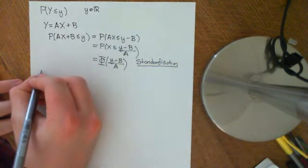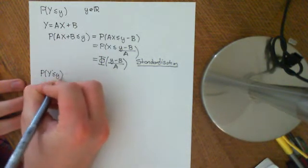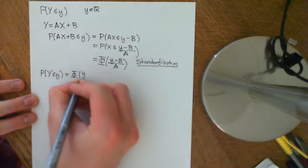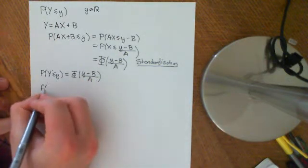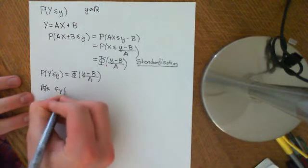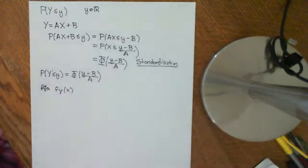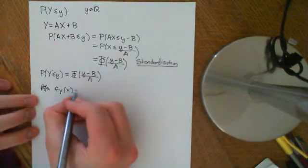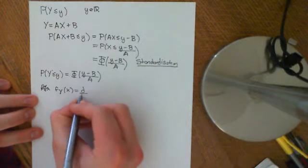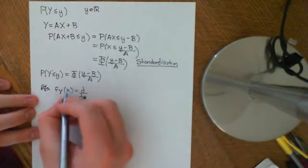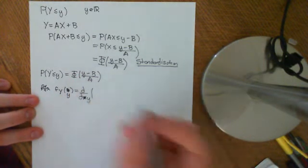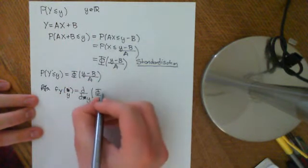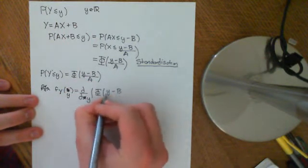The probability that Y is less than or equal to little y is equal to phi of (y minus b) over a. So if we want to know the PDF — little f of y — it's going to be equal to the derivative with respect to little y of phi of (y minus b) over a.